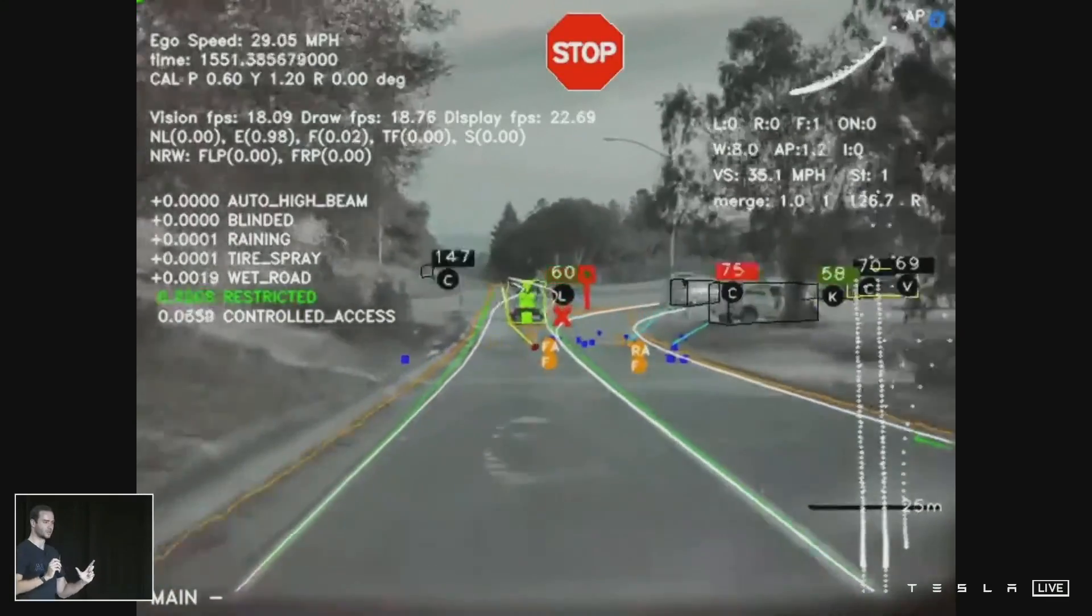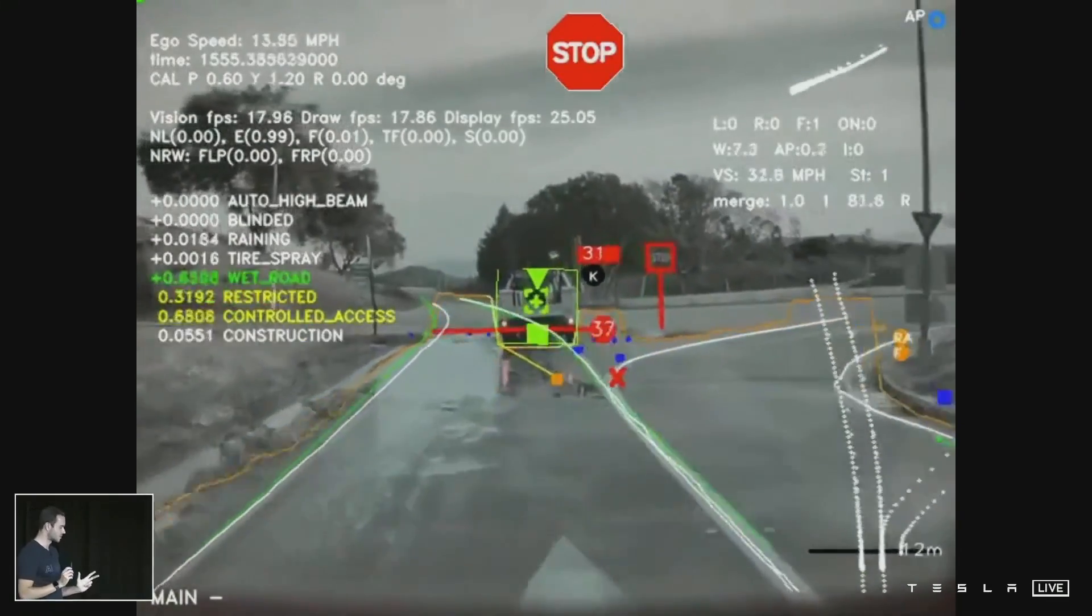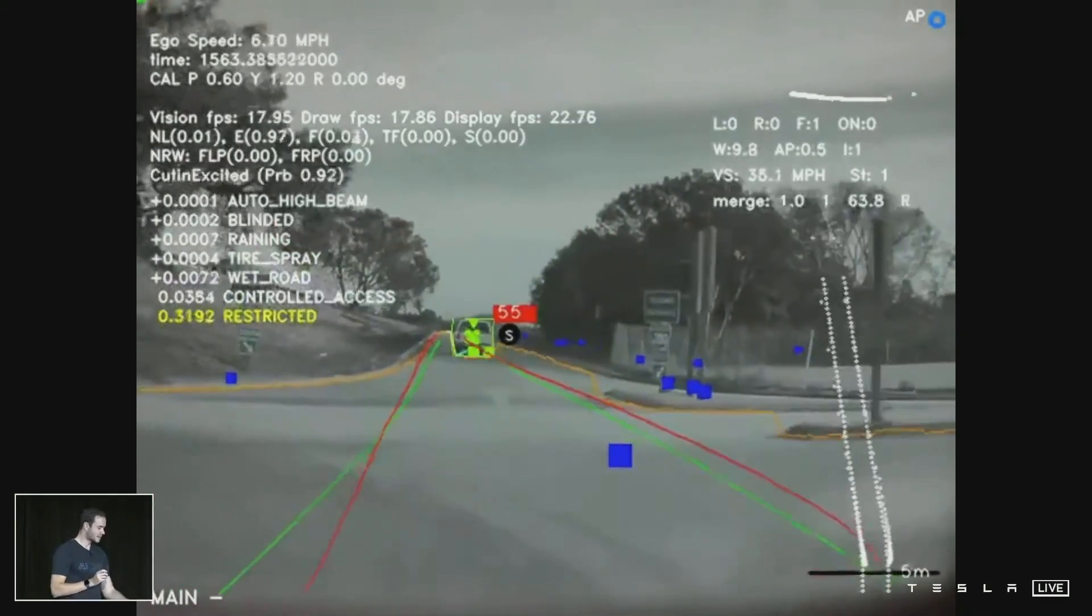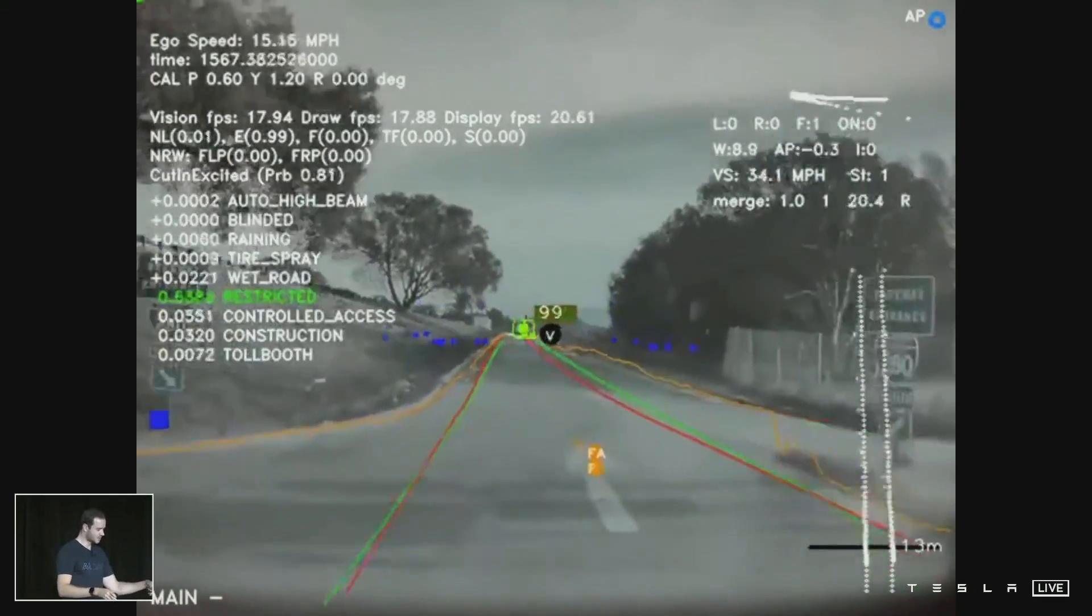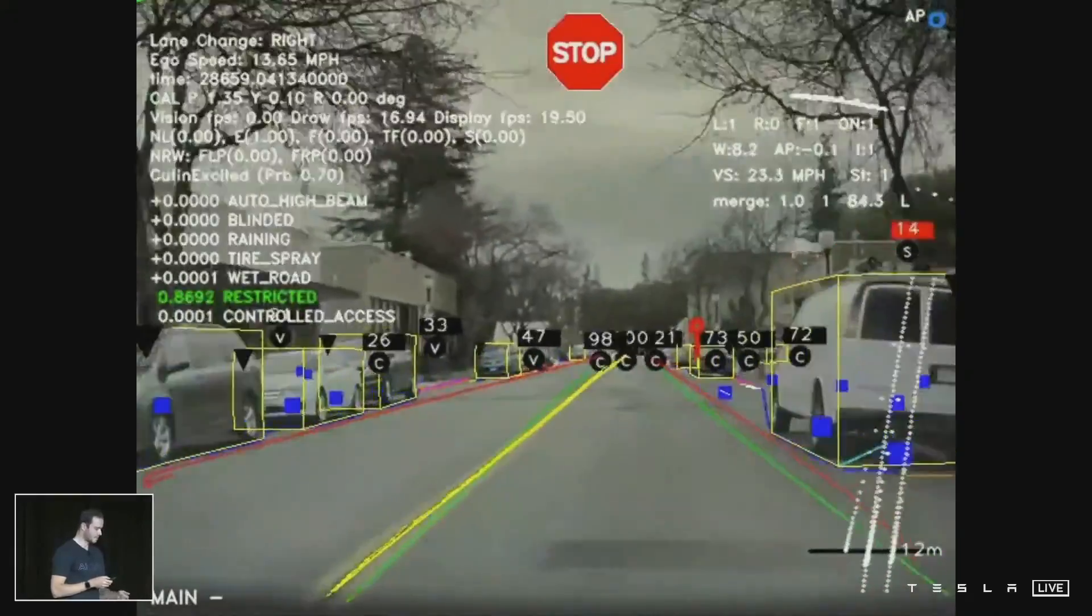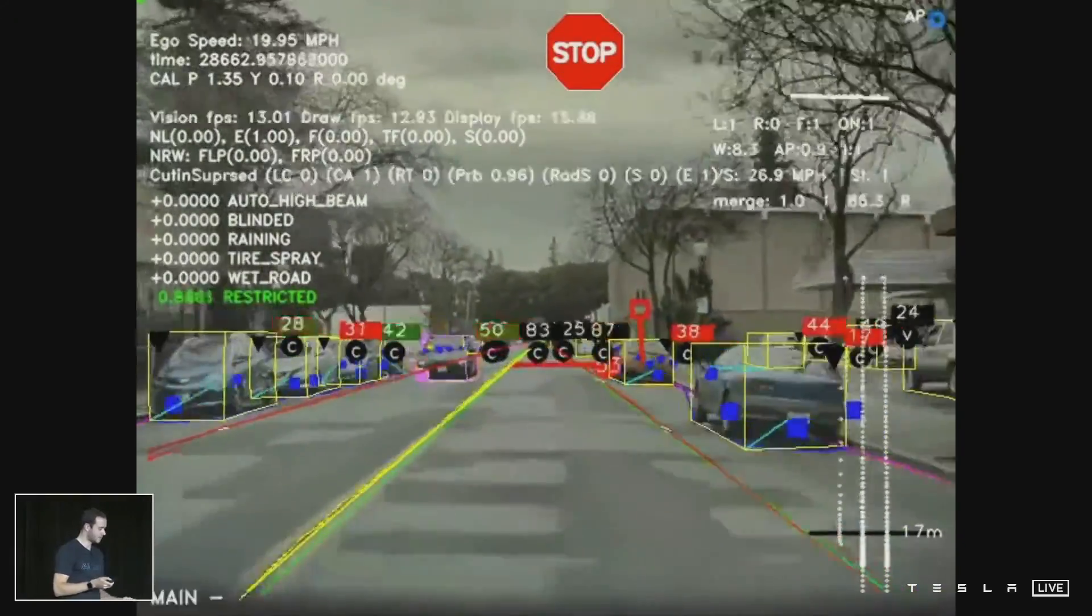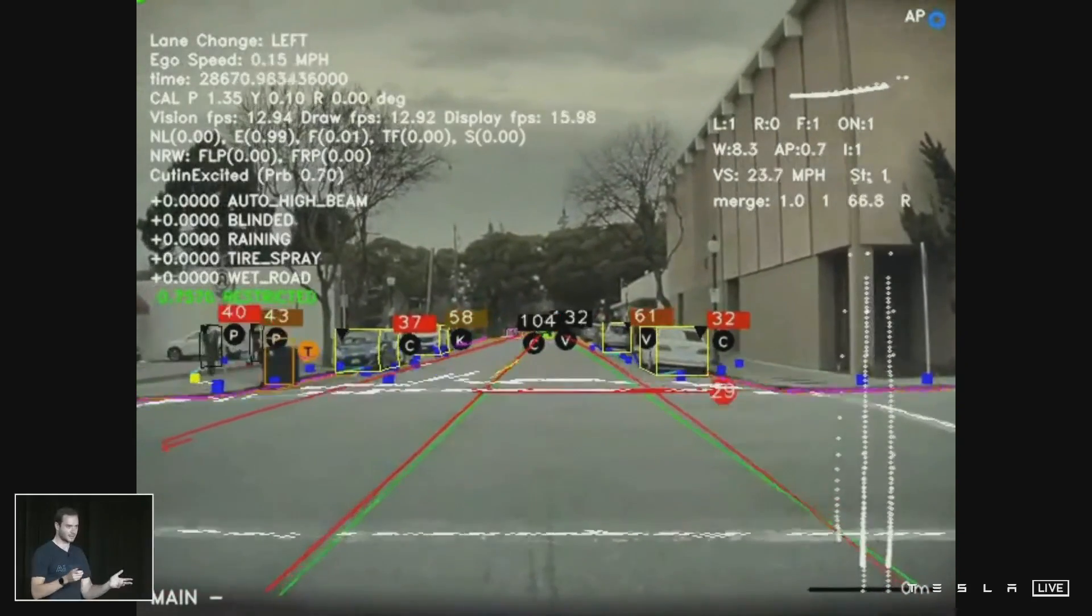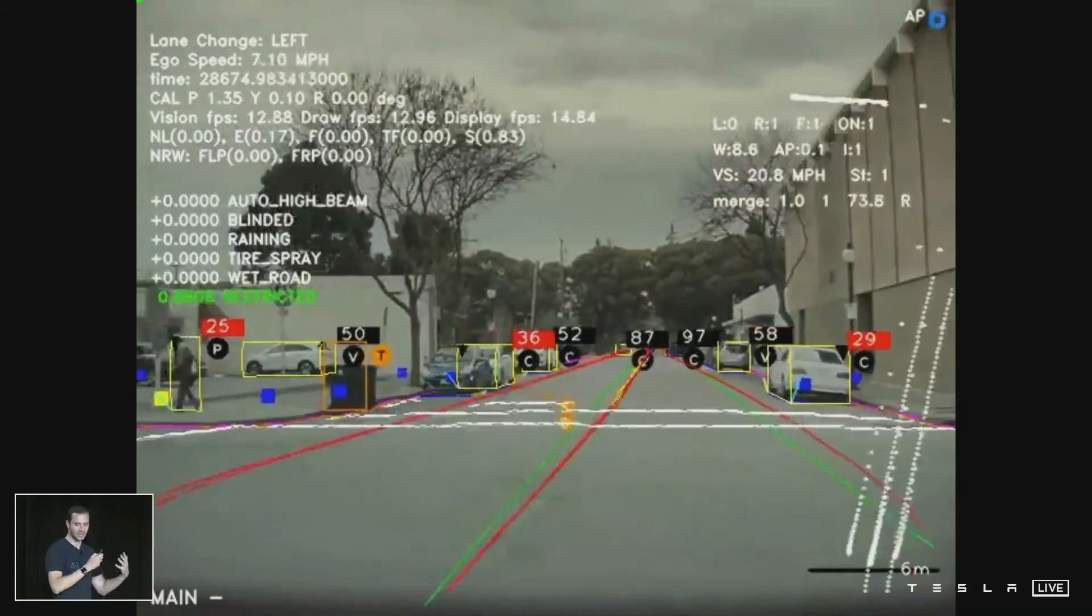We are processing just individual images and making a large number of predictions about these images. For example here you can see predictions of the stop signs, the stop lines, the lines, the edges, the cars, the traffic lights, the curbs, whether or not the car is parked, all of the static objects like trash cans, cones, and everything here is coming out of the net, in this case out of the Hydra net.